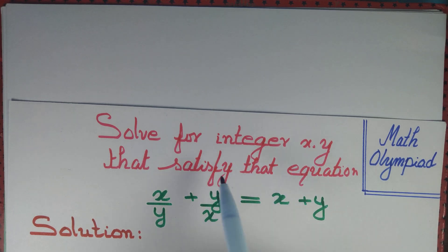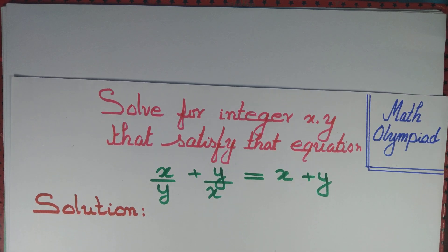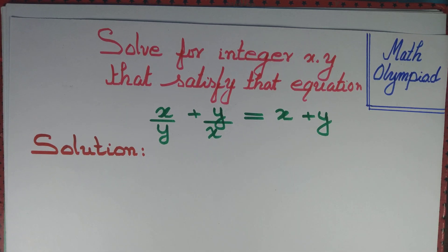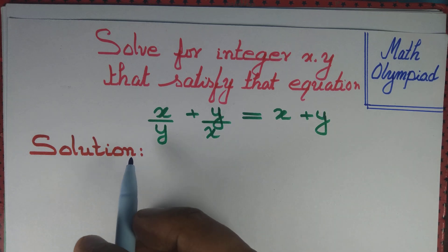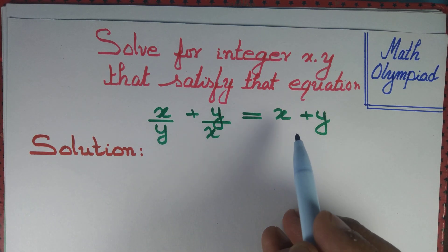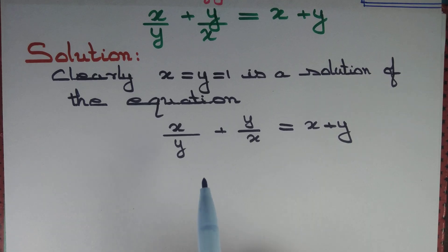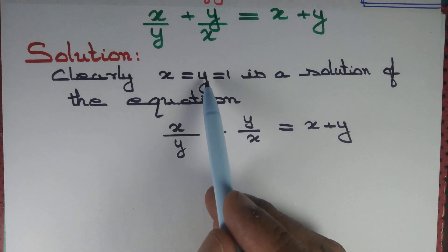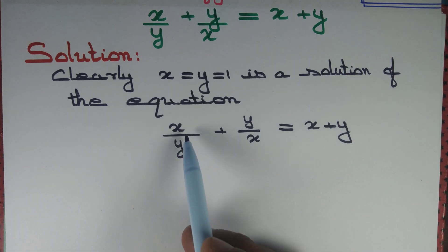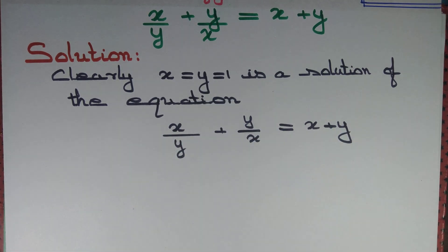Let us solve for integers x, y that satisfy the equation x/y + y/x = x + y. We want to solve this equation. Obviously we can see that x = y = 1 is a solution of this equation x/y + y/x = x + y.